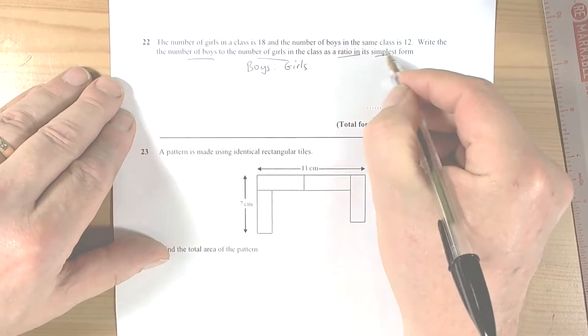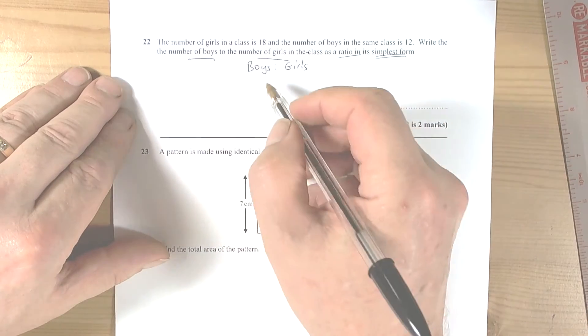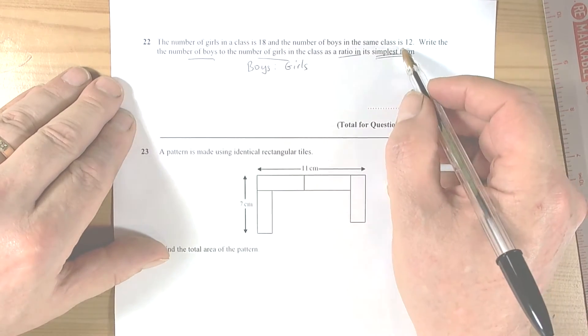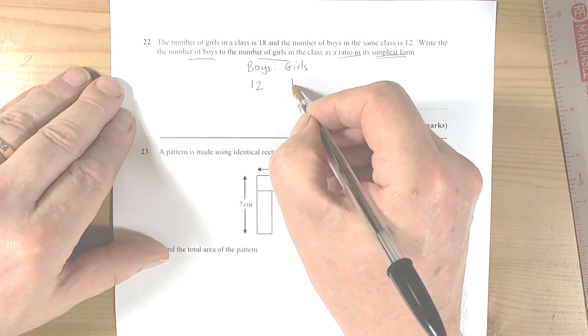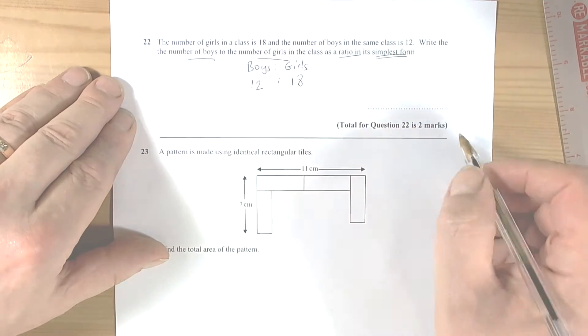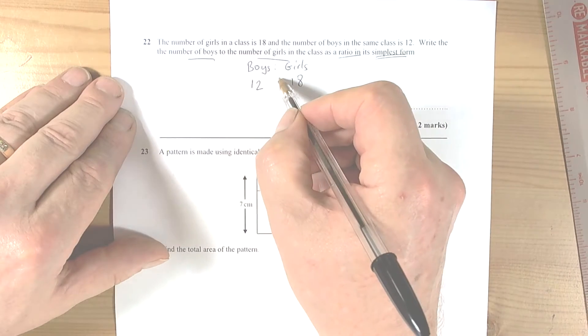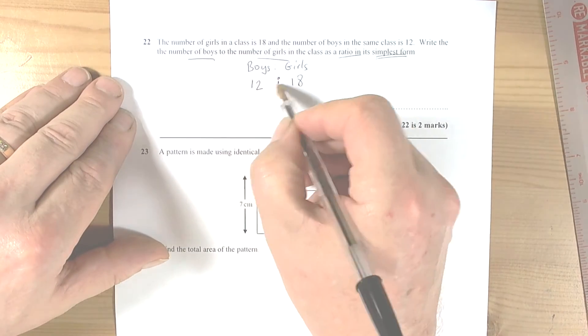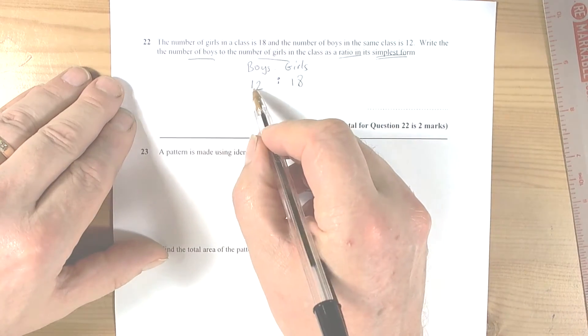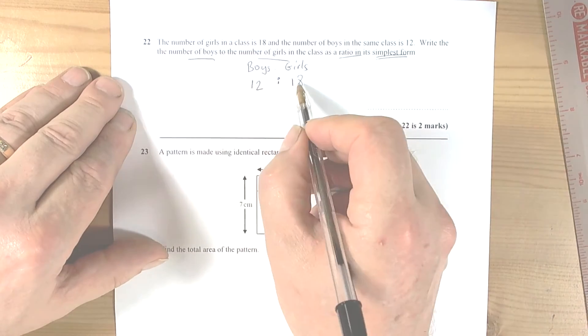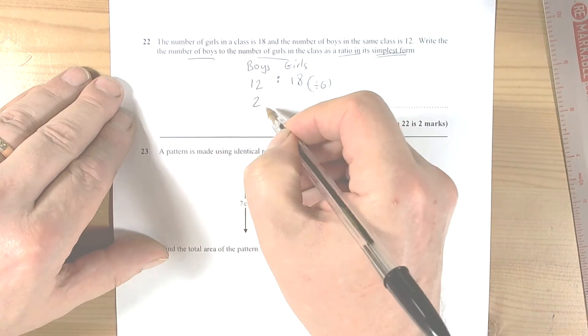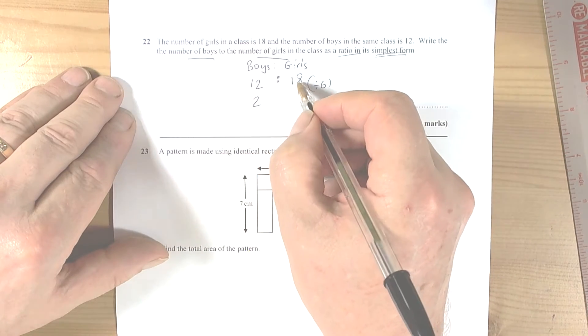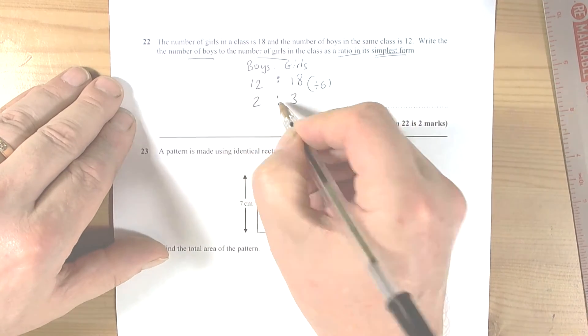It wants the ratio in the simplest form. So the number of boys was 12 and the number of girls was 18, and it wants the ratio in the simplest form. So therefore we've got to look to see whether either number has common factors. So both of these have a common factor of six, so we can divide each by six. So 12 divided by 6 is 2 and 18 divided by 6 is 3.